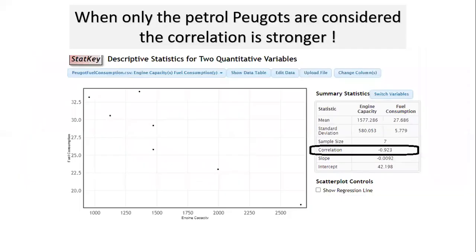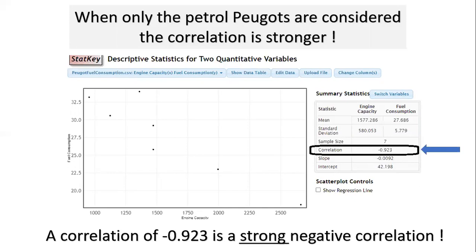And here you can see the result. I've shown here on this slide the resulting scatter plot for what happens when we eliminate the two diesel cars. And we notice here by looking at the correlation in the summary statistics on the right, that when we eliminate the diesel Peugeots and only look at the petrol ones, the correlation is stronger. Notice here that we now have a correlation value of negative 0.923. That's not just a moderate negative correlation. That's indeed a strong negative correlation. In other words, we can predict the fuel consumption of a non-diesel Peugeot pretty well by knowing its engine capacity.